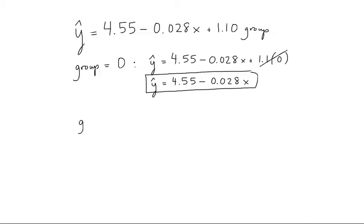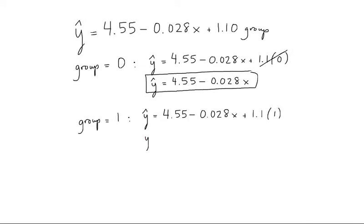For group 1, the estimated regression equation is 4.55 minus 0.028x plus 1.1 times 1, since the group is 1. This means the estimated regression equation simplifies to 5.65 minus 0.028x.